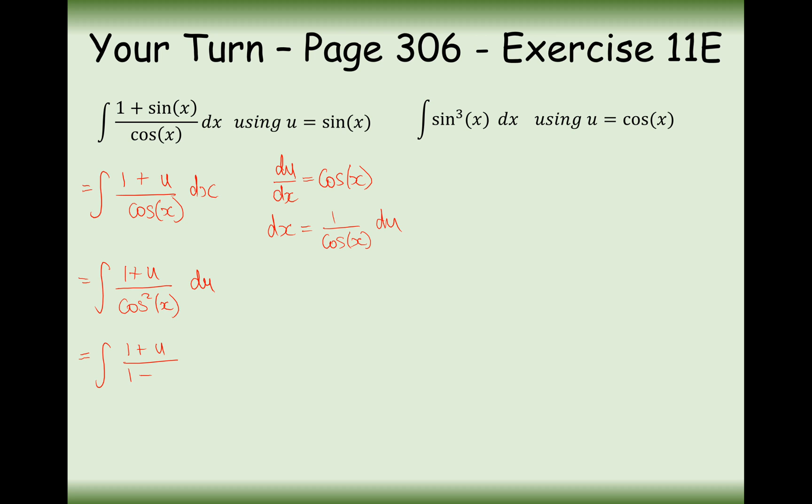1 plus u over 1 minus u squared du. Where did the u squared come in? Well, u is sine, it's 1 minus sine squared, so that's 1 minus u squared.